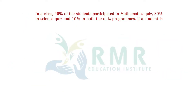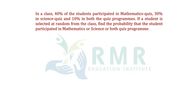In a class, 40% of the students participated in math quiz, 30% in science quiz, and 10% in both quiz programs. If a student is selected at random from the class, find the probability that the student participated in mathematics or science or both quiz programs.